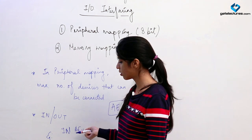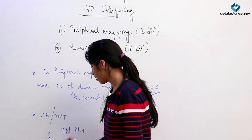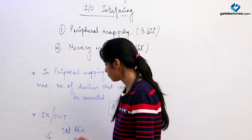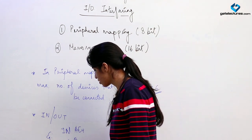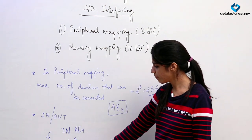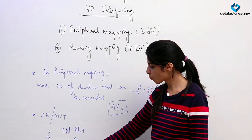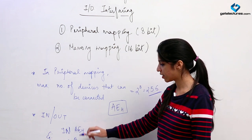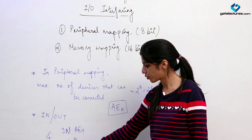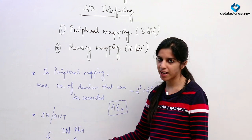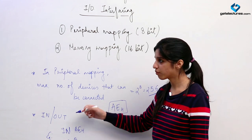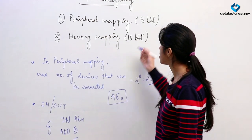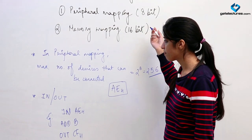Basically, using the instruction IN AE, any data can be input from the device connected at address AE. Suppose we have connected a keyboard at location AE — whatever data you input through the keyboard will come inside the microprocessor. Then suppose you perform some operation like ADD B, then give the instruction OUT CF, and we have connected a display screen at CF. So we take input from the keyboard, add the contents of register B, and output it at CF to the screen. This is how using IN and OUT we can input or output data from any devices; each device has an 8-bit long address.